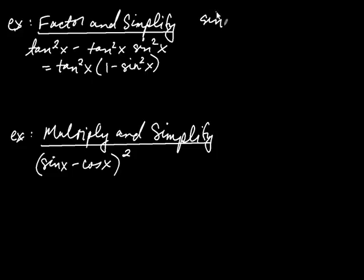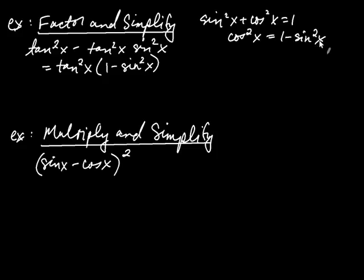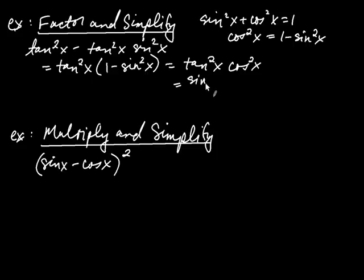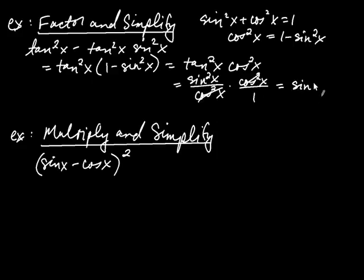Since sine²θ + cosine²θ = 1, subtracting sine squared from both sides gives cosine squared = 1 minus sine squared. So 1 minus sine squared is replaced with cosine squared, giving tangent² times cosine². Since tangent squared = sine squared / cosine squared, multiplying by cosine squared cancels the cosine squared terms, leaving just sine squared as the final answer.